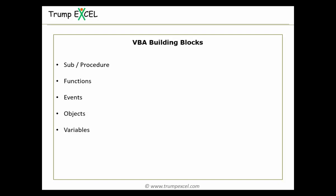There is the sub or procedure where you write your code, then there are functions — you can use VBA functions or create custom functions. Then there are events, where you can ask VBA to fire a code whenever an event happens. For example, if you double-click on a cell and you want something to happen, that's an event-based VBA procedure. You also have objects — everything in Excel is an object, be it a chart, a worksheet, or a workbook. Then there are variables, and we'll have a separate video on variables.